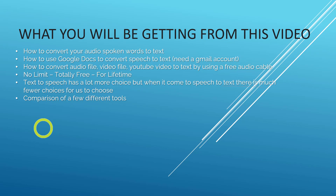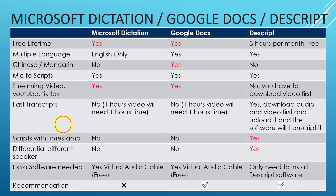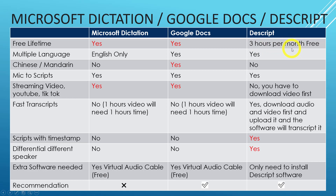So I'm going to do a comparison of a few different tools. With Microsoft Windows 10 or 11, you have Microsoft Dictation. For Google, we have speech to text built into Google Docs. And then we have a third-party software called Descript. Let's take a look at the different options. Both Microsoft Dictation and Google Docs are free for lifetime. Descript offers three hours per month, which is sufficient for most of us.